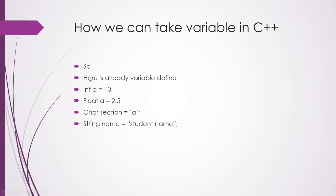When we want to store a numeric value, we choose integer. If you are using a floating point value like 2.5, then a equals 2.5 — we are storing 2.5 into variable a, and we use the float data type. Here is a character: section equal to 'a' — we are storing 'a' in single quotes, so we use the char data type.